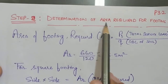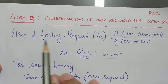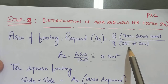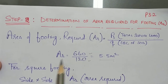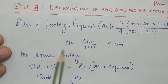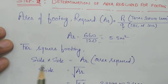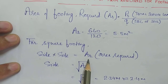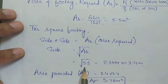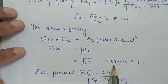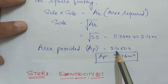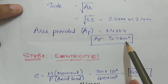Step two is determination of the area required for the footing. Area required = total service load divided by safe bearing capacity = 660 / 120 = 5.5 square meters. Since we are designing a square footing, all sides are equal, so side = √5.5 = 2.34 m, which we round up to 2.4 m. Area provided = 2.4 × 2.4 = 5.76 square meters.